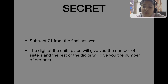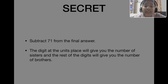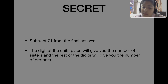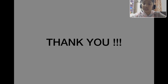Now here is the trick: subtract seventy-one from the final answer. Our final answer is seventy-two, so seventy-two minus seventy-one equals one — giving us the result zero-one. The digit at the units place gives you the number of sisters, which is one. The remaining digits give you the number of brothers, which is zero. So this was the trick — thanks for watching!